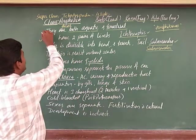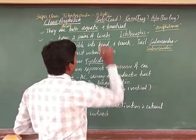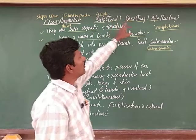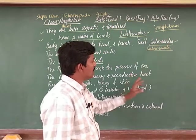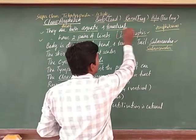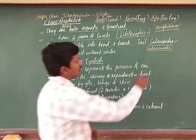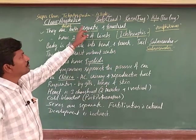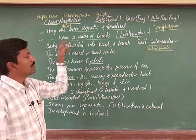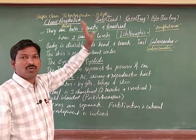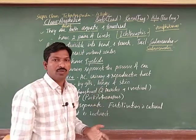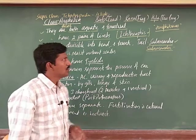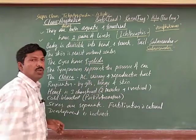Amphibians have two pairs of limbs — forelimbs and hindlimbs. In most examples such as toad, frog, and tree frog, two pairs of limbs are present. An exception is Ichthyophis, which is limbless. Salamander also has two pairs of limbs. Total four limbs — hence the name Tetrapoda. These limbs help in locomotion.